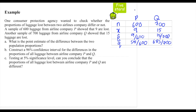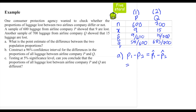Let me rename company P to company 1 and company Q to company 2 to make things easier. For question A, the point estimate of the difference between two population proportions, p1 minus p2, is estimated by p1-hat minus p2-hat, which is 9/600 minus 15/700, giving us negative 9/1400.